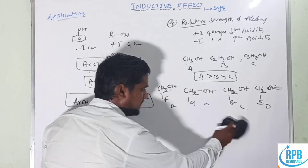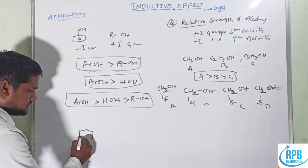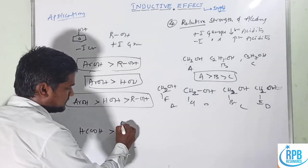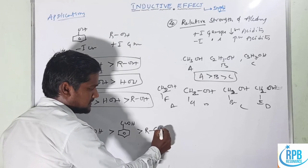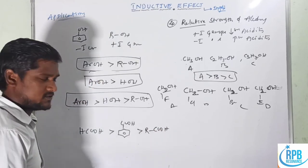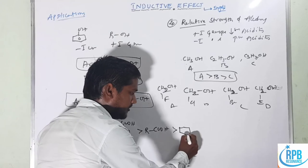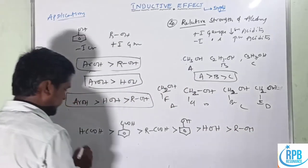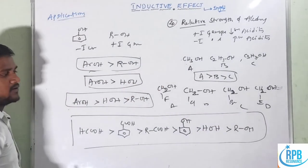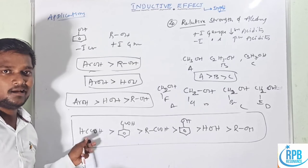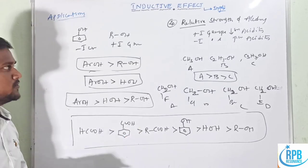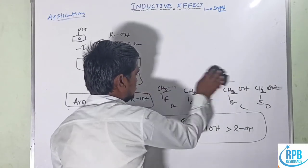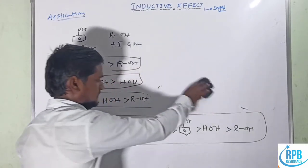The complete acidic strength series is: formic acid > aromatic acids (e.g., benzoic acid) > aliphatic acids > aromatic alcohols > water > aliphatic alcohols. This is the complete order of acidic strength including carboxylic acids and alcohols.